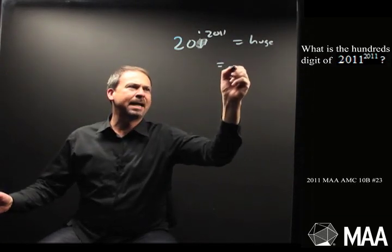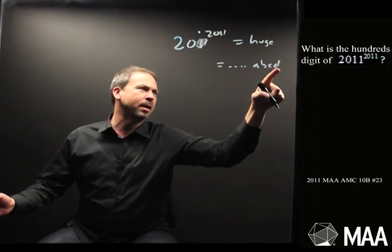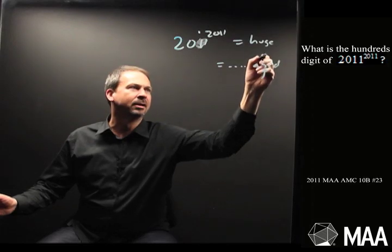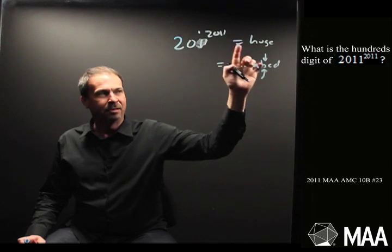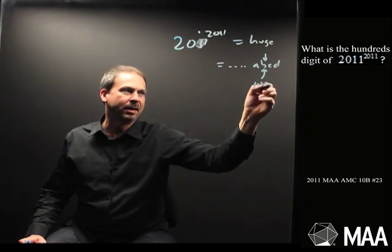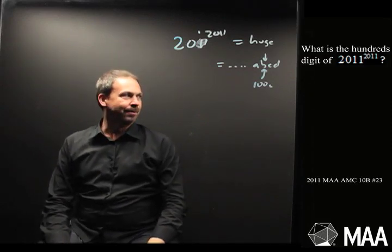What is that? Okay, so it's going to be something that ends in some digits, maybe A, B, C, D. The very last digit is the ones, the second to last is the tens. Alright, the third to last digit is the hundreds digit. So somehow, without actually working this out, I need to deduce what the third to last digit is going to be. Something to do with the hundreds.